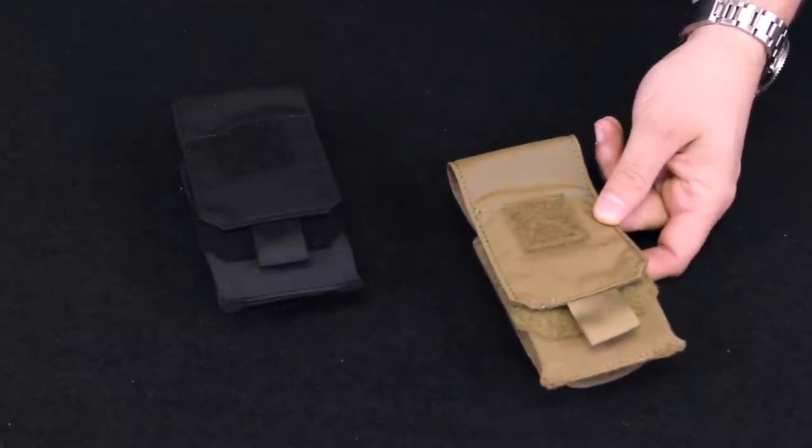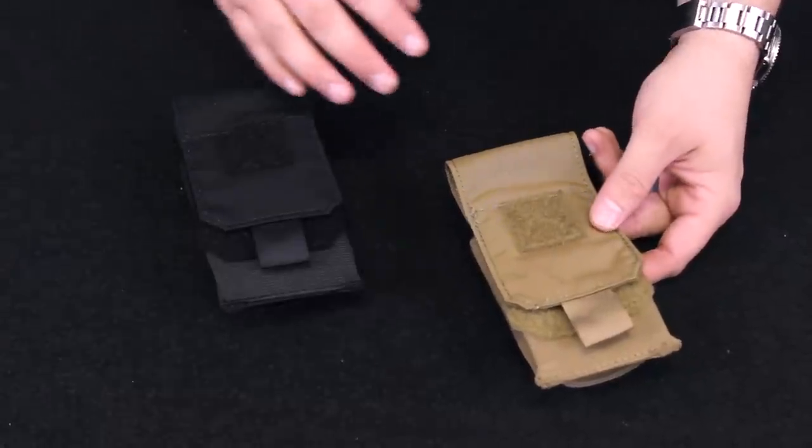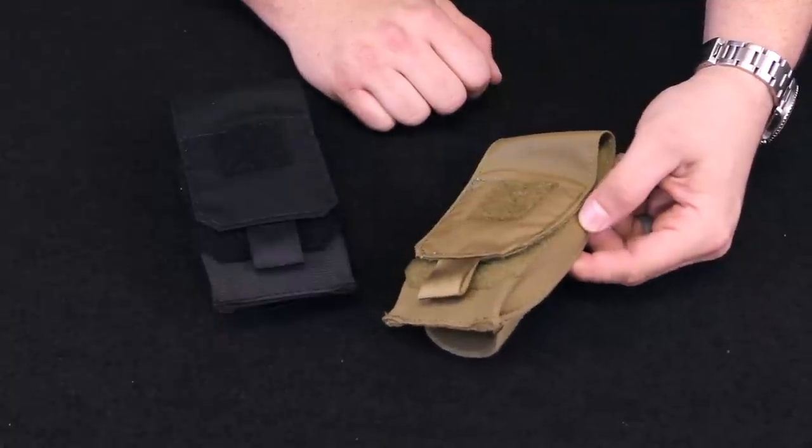This is perfect for storing pocket-sized items like our EDC trauma kit, compasses, cell phones and other electronics. Additionally, with the four-way mounting system, the Slimline pouch can be mounted to virtually any piece of gear.